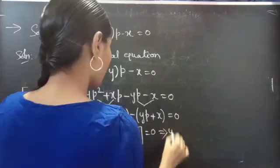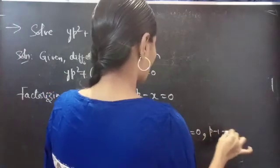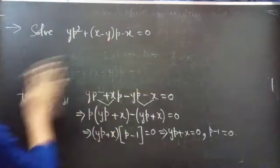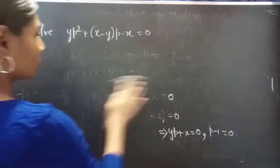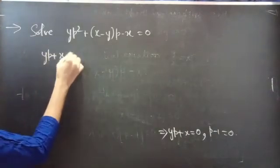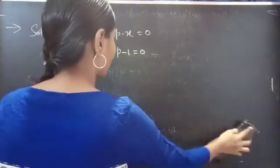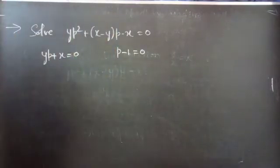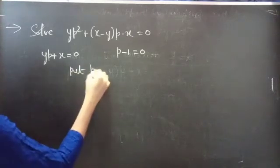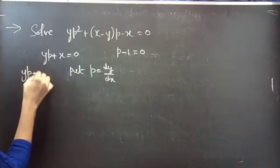Then, YP + X equals to 0, and P minus 1 equals to 0. We will find the solution for each. Consider YP + X equals to 0. Put P equals to dy by dx.